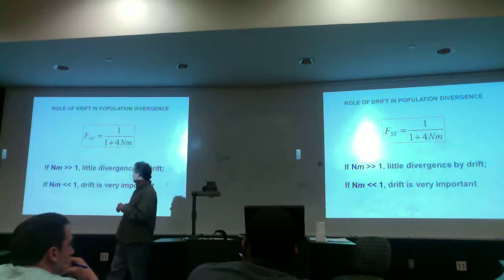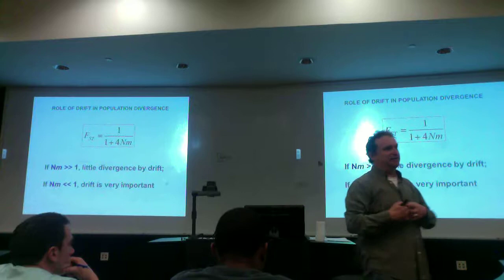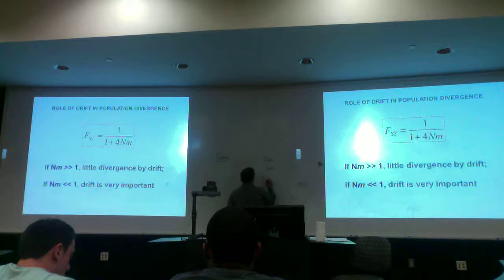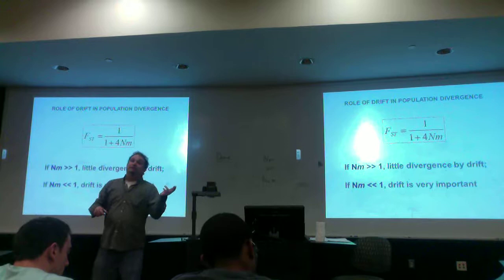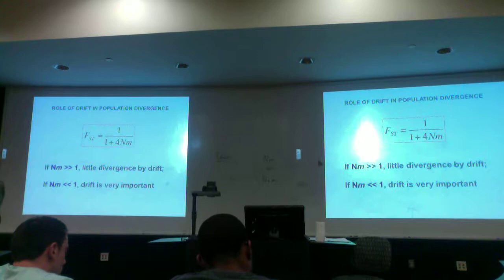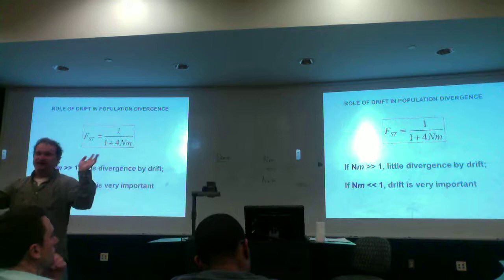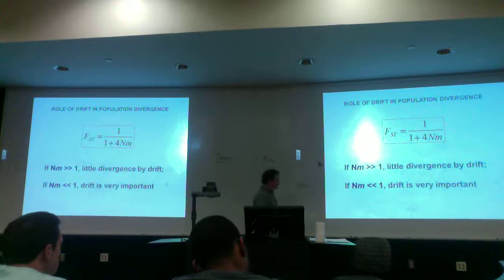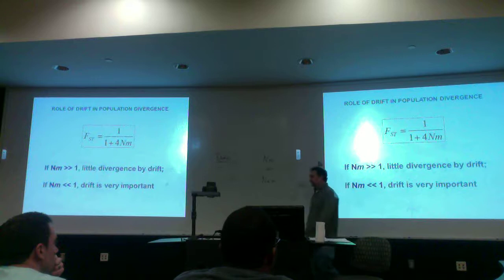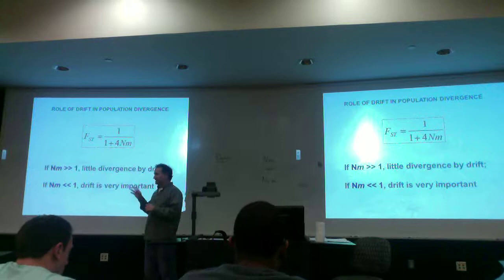In short, FST and number of migrants are related. When migration is very strong, there will be very little divergence. The number of effective migrants is sometimes written as NEM. When there's a lot of migration, populations will be linked and little divergence occurs due to drift. When there's very little migration, drift becomes very important within each subpopulation and they will diverge from each other — in other words, they begin to act as evolutionarily independent units.